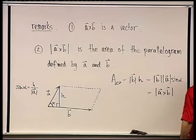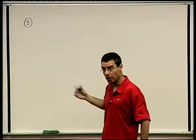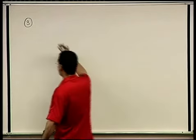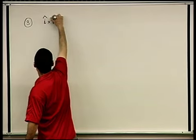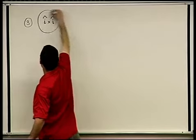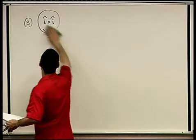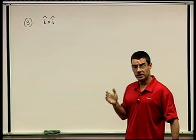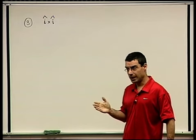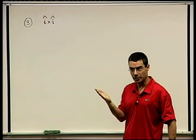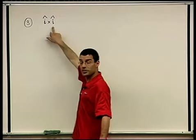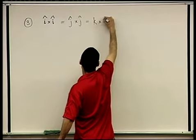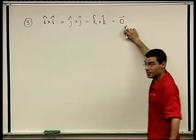Remark three: What is i cross i? Its length is 1 times 1 times sine of zero, which is zero. So i cross i is the zero vector. Likewise, j cross j and k cross k are all the zero vector.